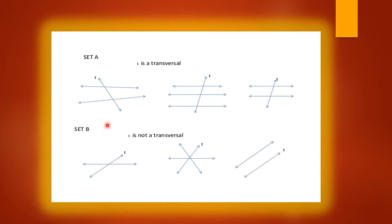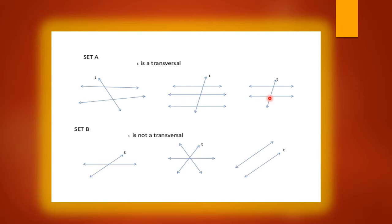Can you see this? Here I have shown you Set A and Set B. In Set A, T is a transversal. Why? Because in this example, the third line is going to cut more than two parallel lines. So these lines are parallel and the third line that cuts them is known as a transversal. In Set B, T is not a transversal.